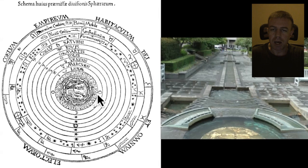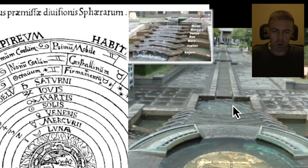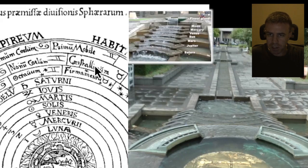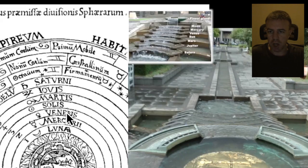Here we have a Ptolemaic structure of the universe from Claudius Ptolemy. I want to zero in on this and the fountain. Down here I've already likened this to the four elements: earth and water indicated in here, then air, then fire. As we move from the moon through to Saturn, we have these seven plates representing the seven spheres. I'm suggesting we have these three regions here again represented, basically comparing this with the Ptolemaic map of the universe.